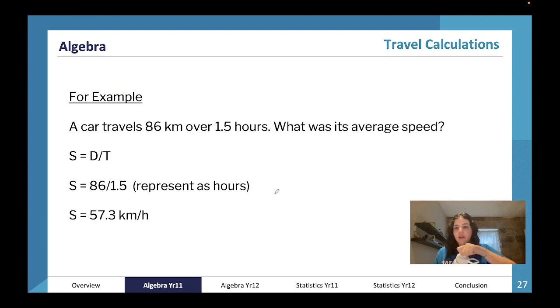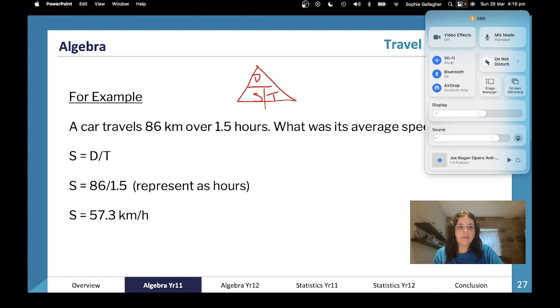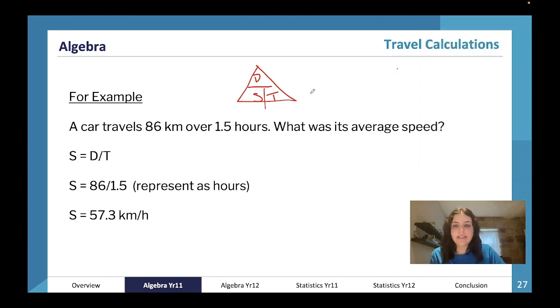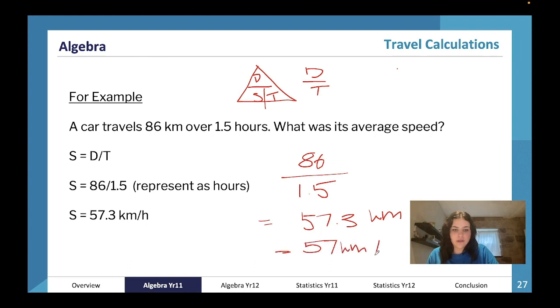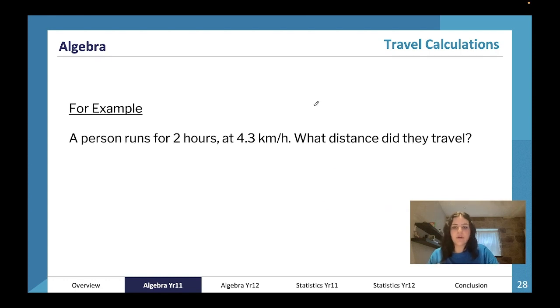Okay, let's have a look. First thing I'm going to do on any question that is about distance, speed, or time is I'm going to come here and draw my triangle: distance, speed, time. A car travels 86 kilometers over 1.5 hours - what was its average speed? So speed is equal to distance divided by time. Our distance was 86 kilometers, our time was 1.5 hours. Therefore, the average speed is 57.3 kilometers per hour. We would likely represent that as 57 kilometers per hour.